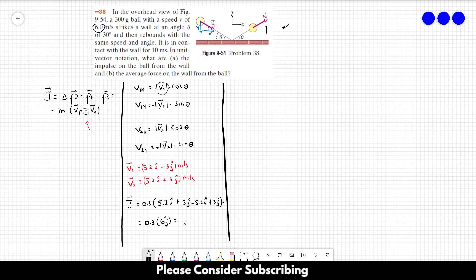Which is equal to 1.8j newton seconds. That's it. Yes, that's the answer of letter A: 1.8j newton seconds. Don't forget to include the unit. Letter B, the average force on the wall from the ball.